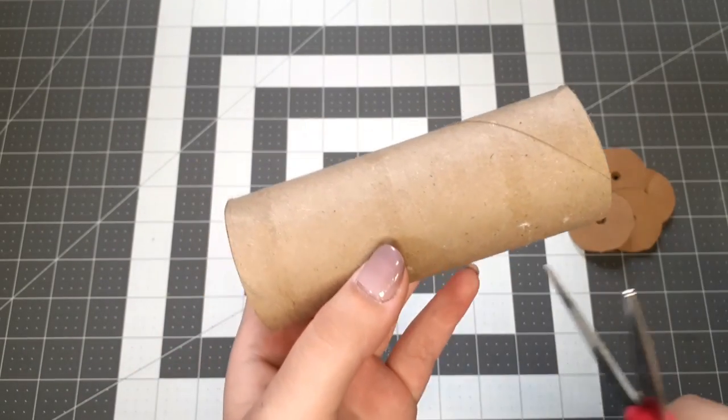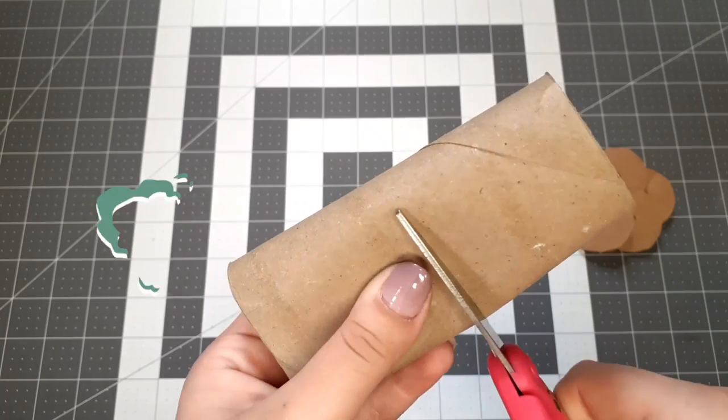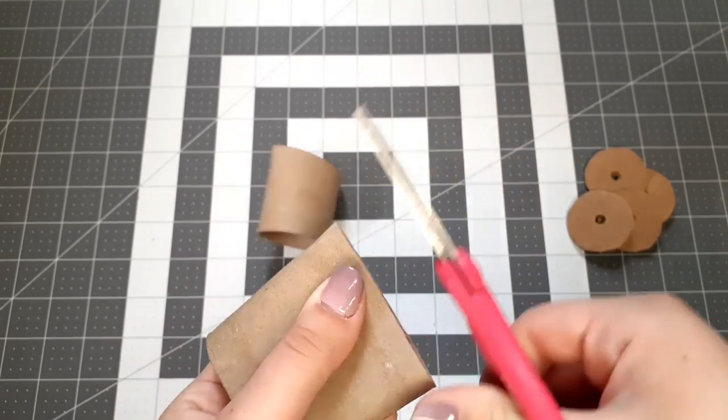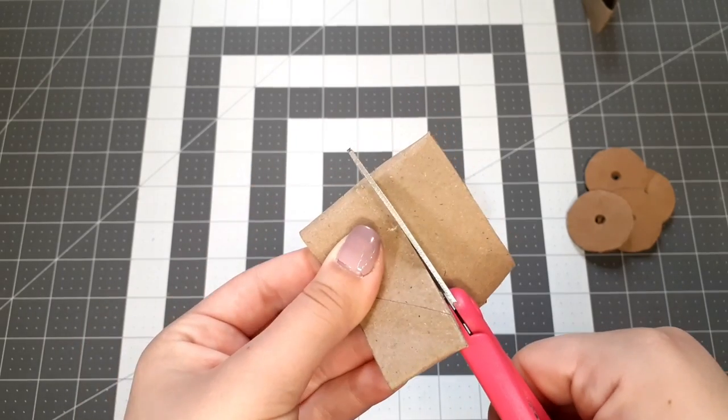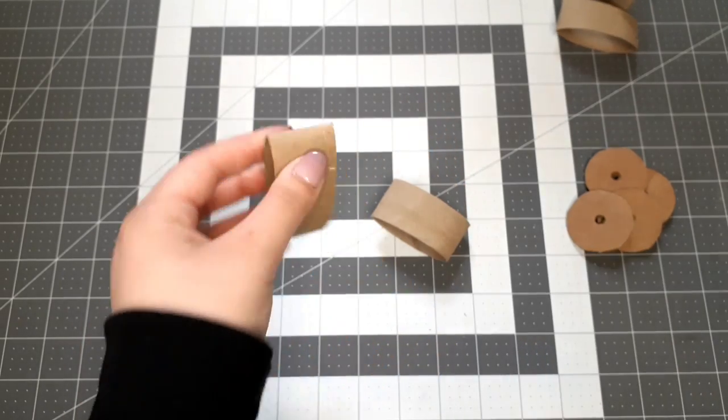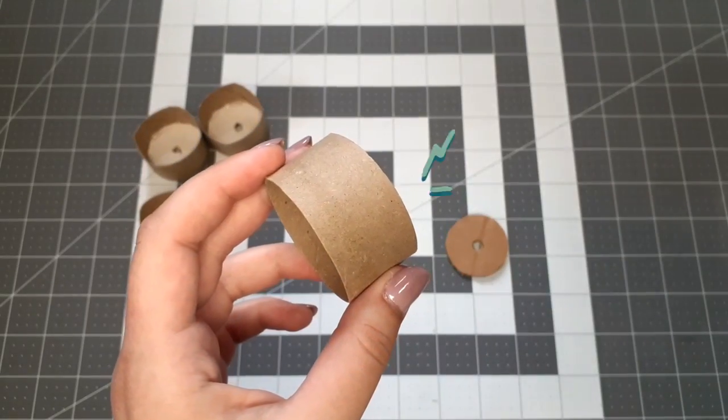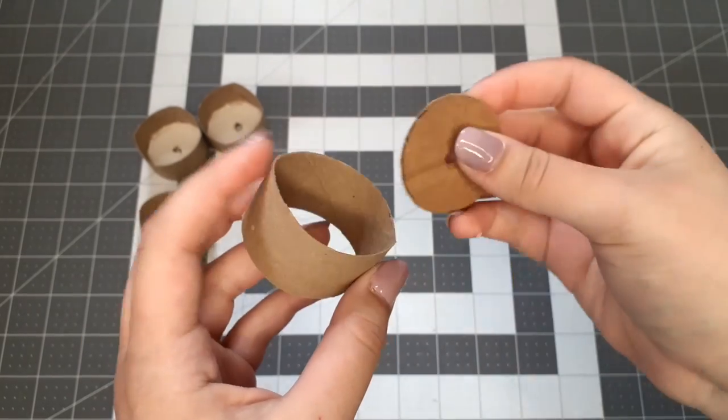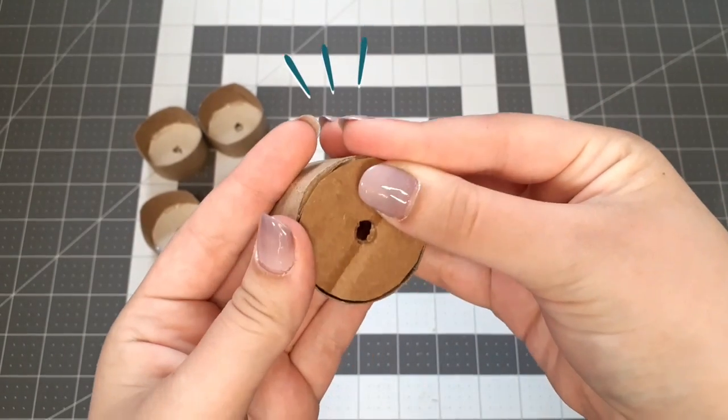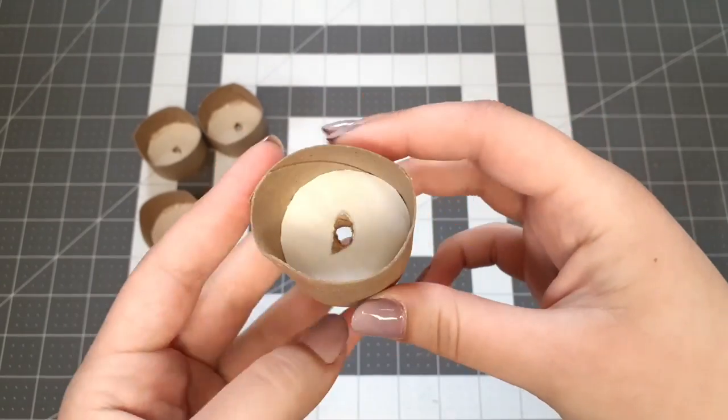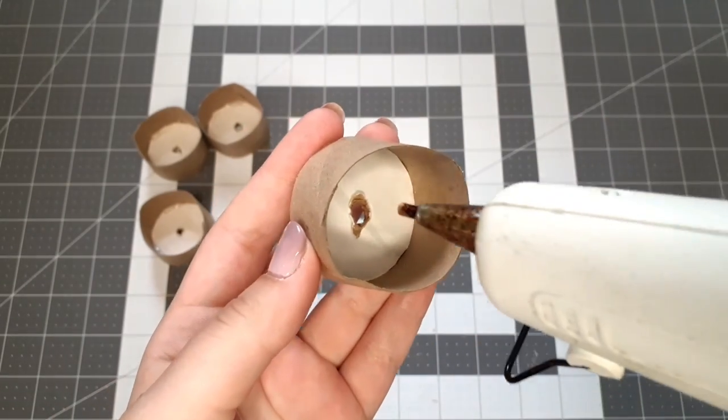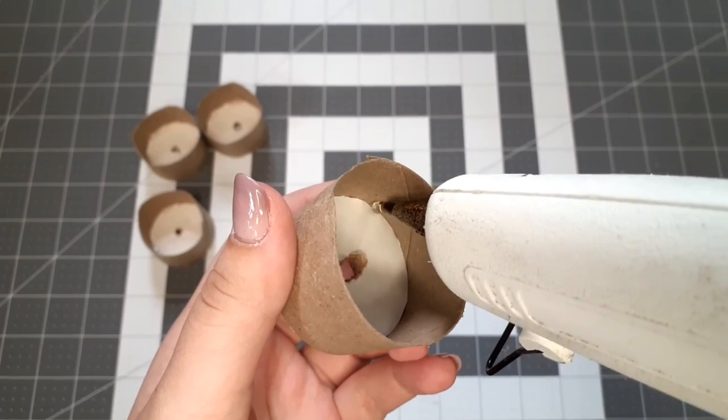Now we'll take the toilet paper tube and cut it in half. I then cut each of those halves in half again, so you get four pieces. After that's done, take one of the tube slices and one of the cardboard circles, and insert the cardboard circle into the tube so it covers up one end. Then we'll just put some little dots of hot glue into the corners to secure everything.